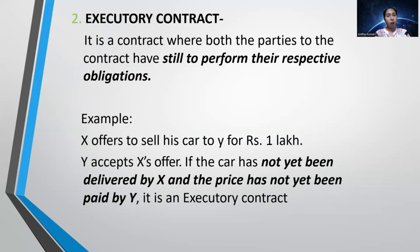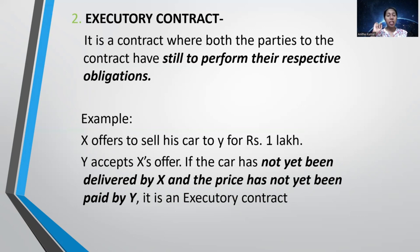What is an executory contract? When both parties, or any one party, has yet to perform their obligation, it is called an executory contract. For example, X sold the car to Y but Y asked for some time to pay the money — X performed his obligation whereas Y is yet to perform. Another example: X offers to sell a car to Y for one lakh rupees and Y agrees, but neither has handed over the car nor paid the money — both parties have not completed their obligations. That is called an executory contract.